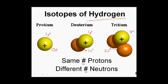The mass number equals protons plus neutrons. The mass number of the first one is one. The mass number of the second is two. And the mass number of the third is three.